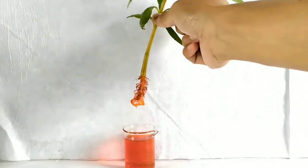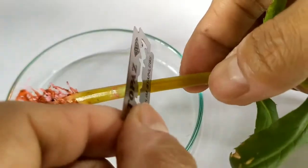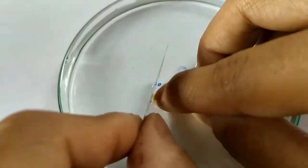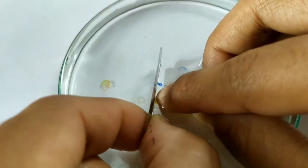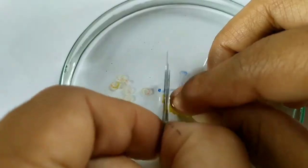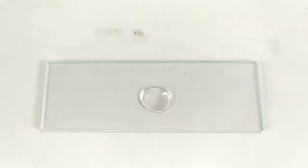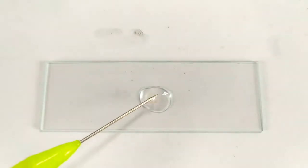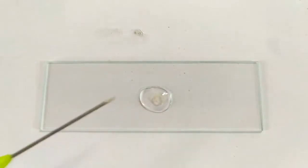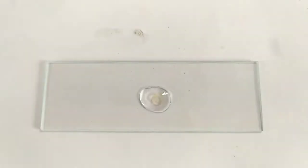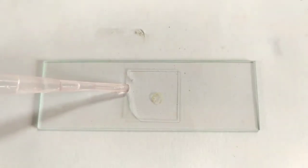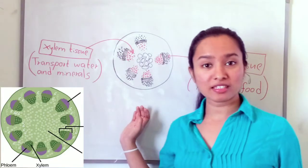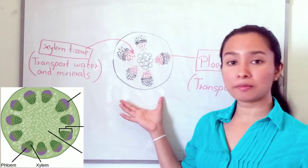Remove the plant from the eosin solution and discard the root. Cut thin freehand transverse sections of the stem and collect them in a petri dish containing water. Select one thin section, place it on a glass slide with a drop of water, cover with a coverslip, and observe under low and then high power of the microscope.